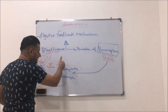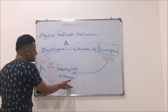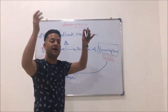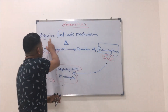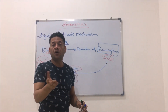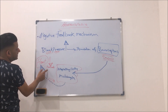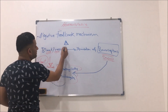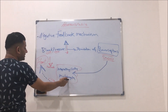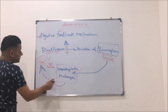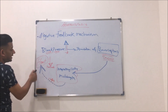When blood pressure decreases, this will also stimulate the baroreceptors and they will send signals to the integrating center. This will stimulate the heart — not to decrease but to increase the heart rate. So from this example you can see that negative feedback does not mean only decrease. If blood pressure is decreased, this causes stimulation of baroreceptors, which send signals to the integrating center of the medulla oblongata, which then sends activating signals to the heart.